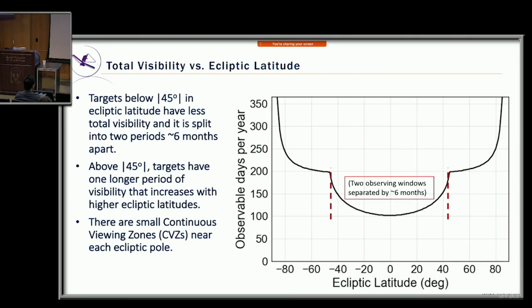As you get above about 45 degrees plus or minus ecliptic latitude, your visibility goes up until you reach the continuous viewing zones — five-degree radius continuous viewing zones around both the north and south ecliptic poles.